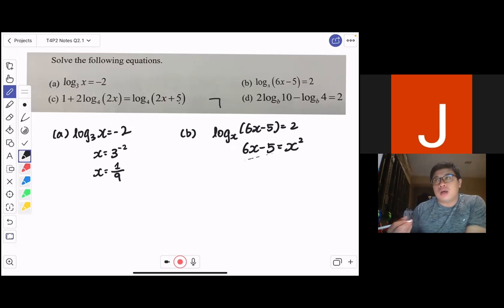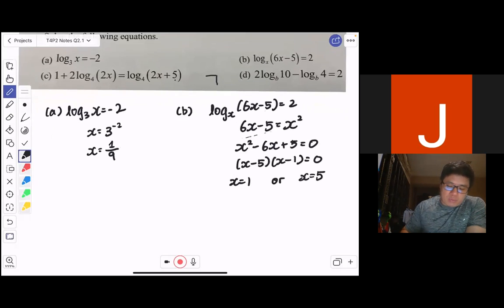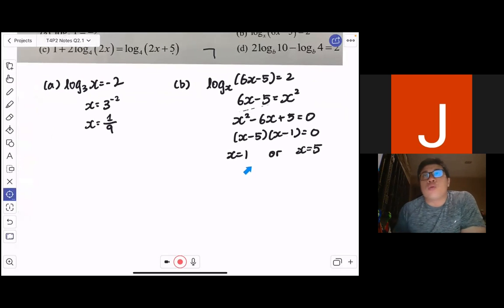So with that, this becomes a very familiar and friendly quadratic equation. Simplifying this equals to 0, just factorizing it: (x - 5)(x - 1) = 0, which is just simplify and factorize your quadratic equation in order for you to solve this equation. You have x = 1 or x = 5.